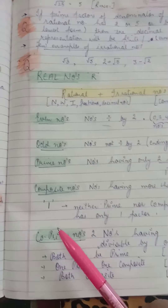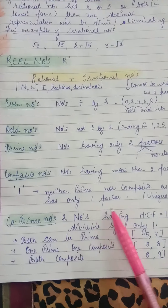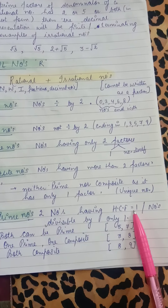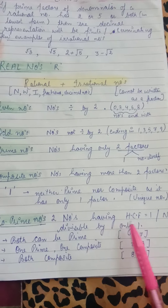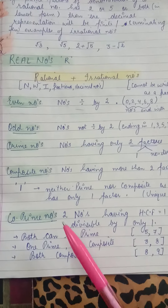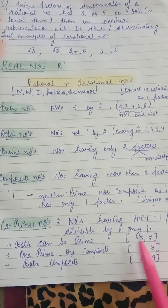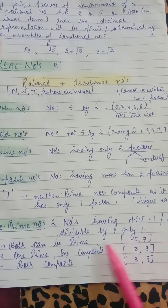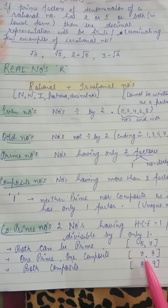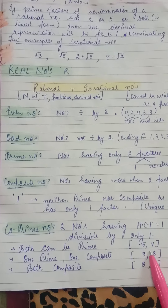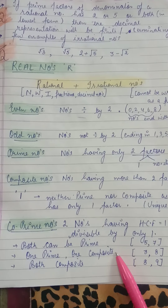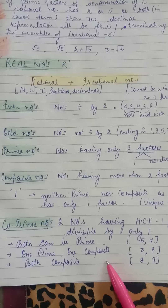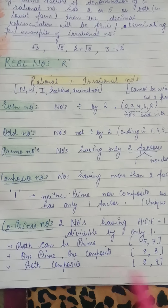Co-prime numbers are two numbers whose highest common factor is 1 — numbers which share no common factor other than 1. When finding co-prime numbers, both numbers can be prime, one can be prime and one composite, or both can be composite.